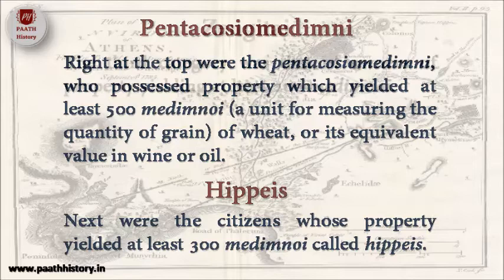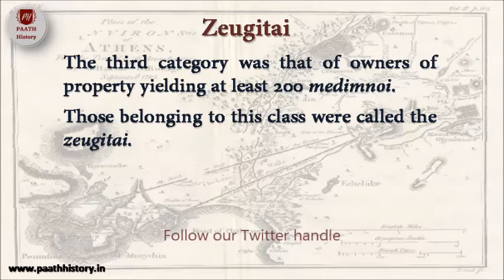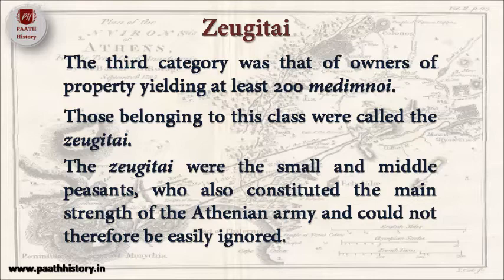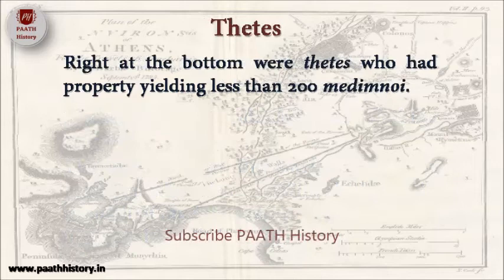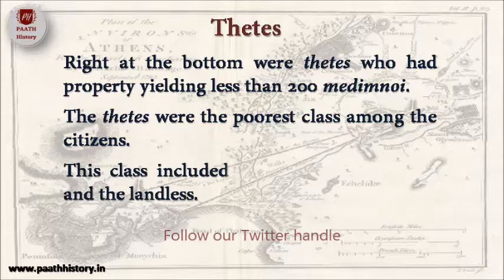The third category was that of owners of property yielding at least 200 Medimni. Those belonging to this class were called the Zeugitai. The Zeugitai were the small and middle peasants who also constituted the main strength of the Athenian army and could not therefore be easily ignored. Right at the bottom were the Thetis, who had property yielding less than 200 Medimni. The Thetis were the poorest class among the citizens, and included poor peasants, artisans and the landless.